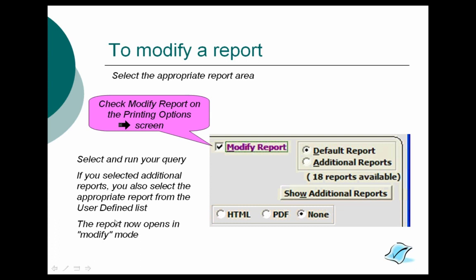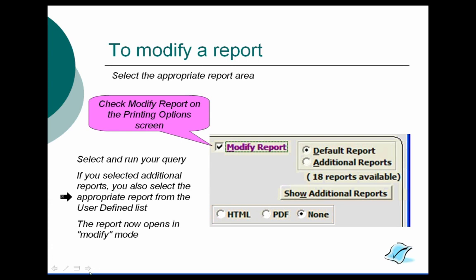To modify a report, you navigate to the appropriate report area, which we covered last week. Now you can finally check the Modify Report options. If you had selected Additional Reports when setting up your report, you'll have the option when you hit OK to select the report from the user-defined list. At that point, the report will open in modify mode. And now I see we have a poll question — Lori, take it away.